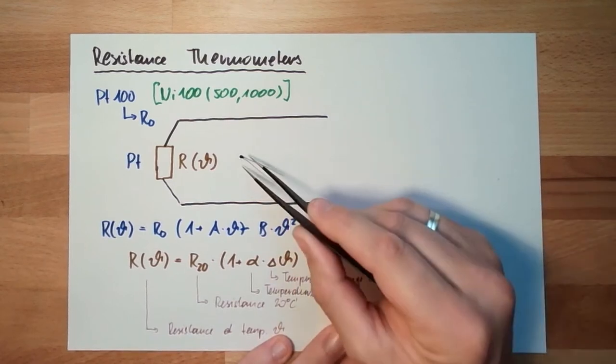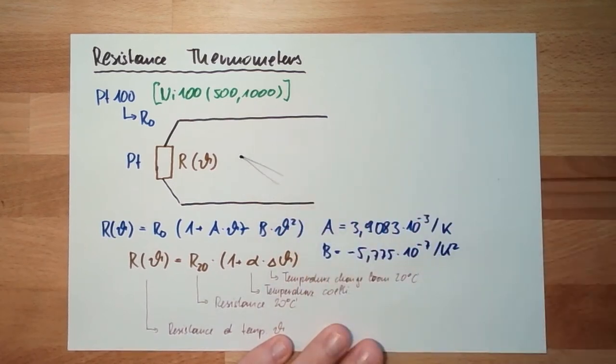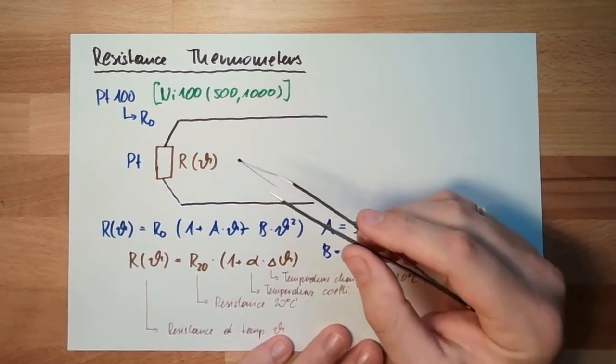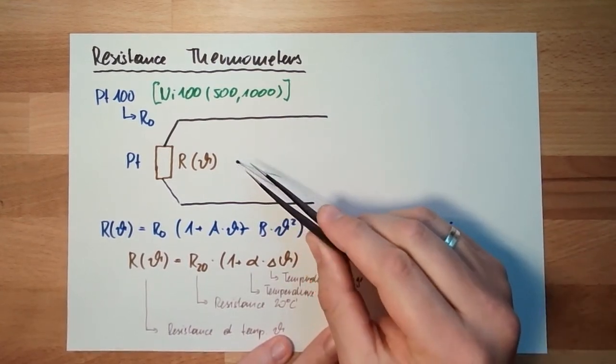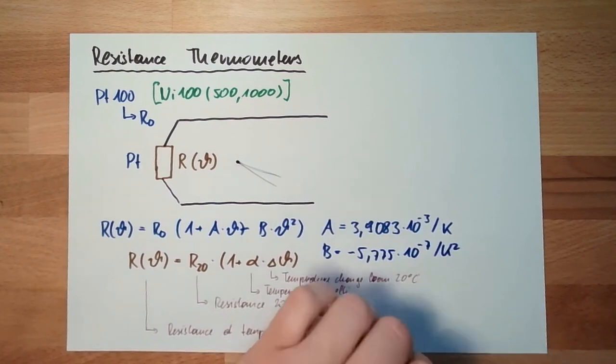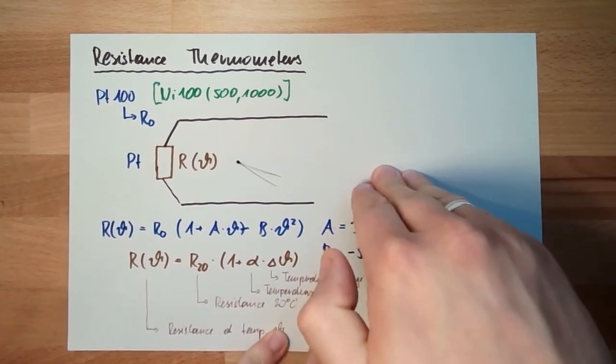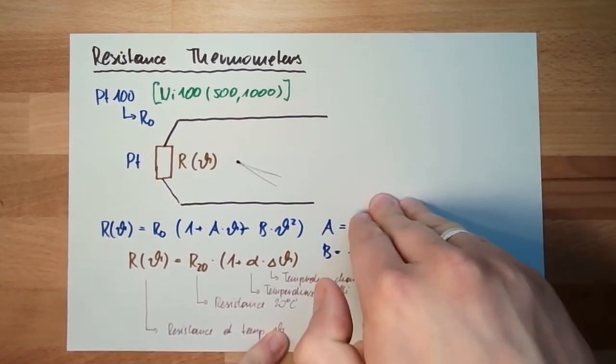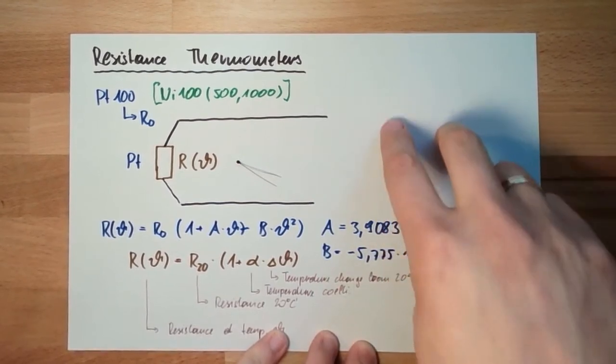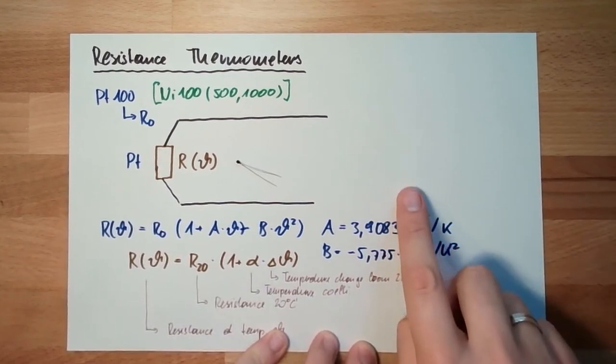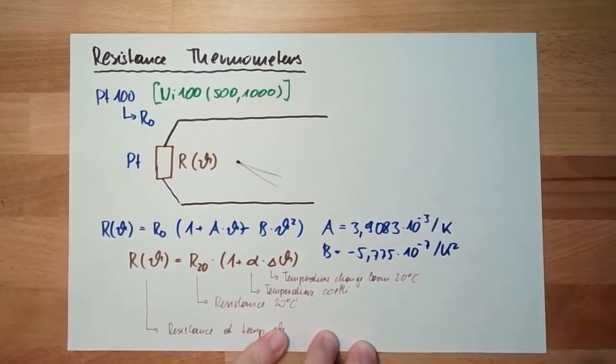And then they are not accurate, they are three, four Kelvin off. But if this is enough, okay. And usually the linearization is also not done by calculating around. This is just a lookup table where it's written, this resistance means this temperature. It just has to look up in this lookup table what resistor is closest to mine, this is the temperature. Also going very fast.